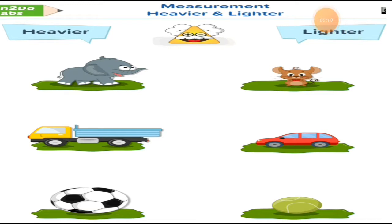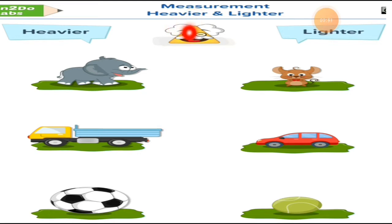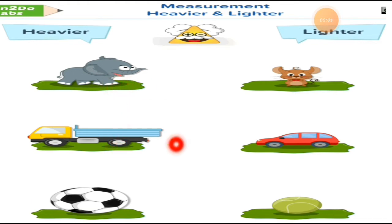Let's read the heading first. The name of the chapter is chapter number 10 — Measurement — and we are doing the weight worksheet: Heavier and Lighter. Here are two columns of things: all the heavier things on one side and all the lighter things on the other. If you compare one row, you can easily understand which is heavy and which is light.